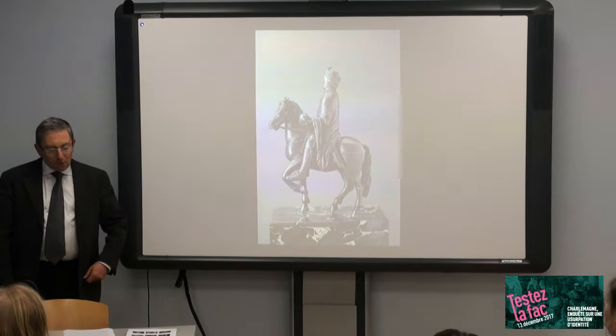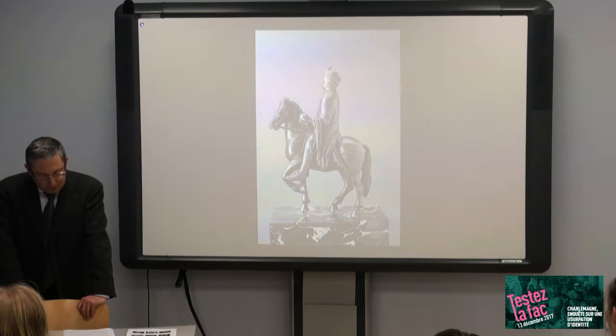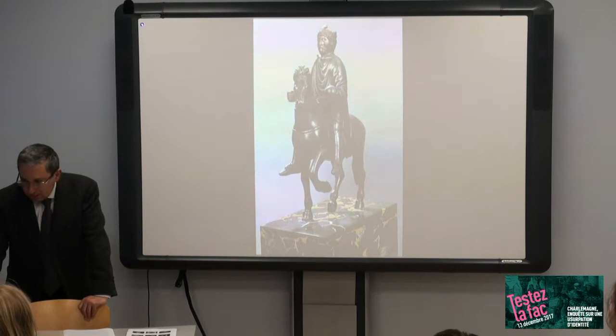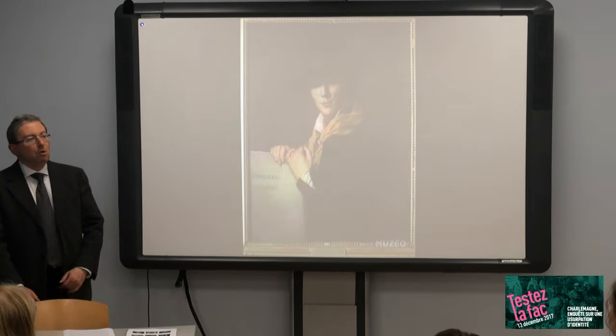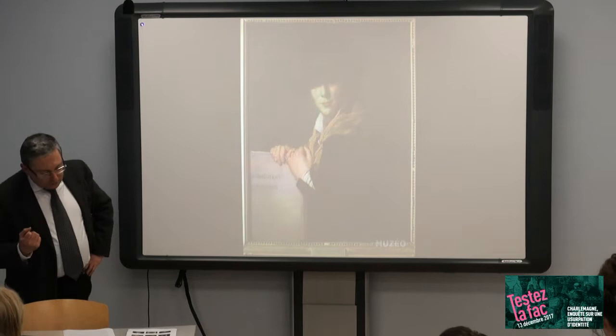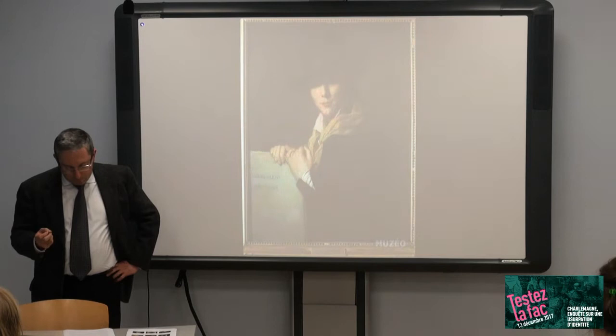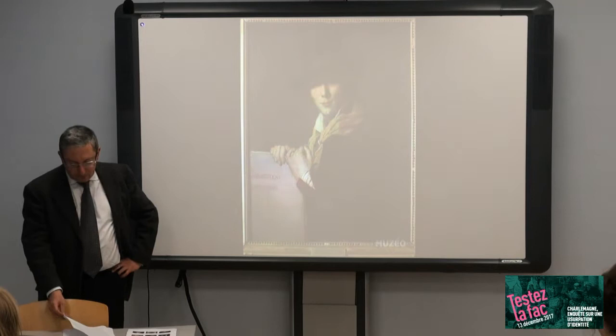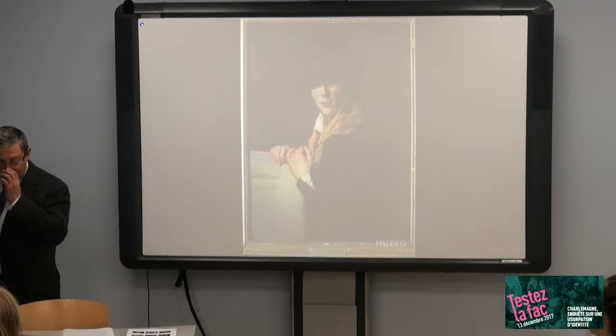Mais si nous remontons un peu plus haut, l'hypothèse parisienne va être mise à mal. En effet, jusqu'en 1837, date de sa dispersion, la statuette faisait partie des collections d'Alexandre Lenoir. Le nom que je viens de prononcer est probablement inconnu parmi vous — normal. Il est pourtant celui d'un personnage clé de l'histoire du patrimoine de notre pays. Il renforce ainsi l'hypothèse que nous avons bâtie et qui voudrait que notre inconnu soit un cavalier médiéval.